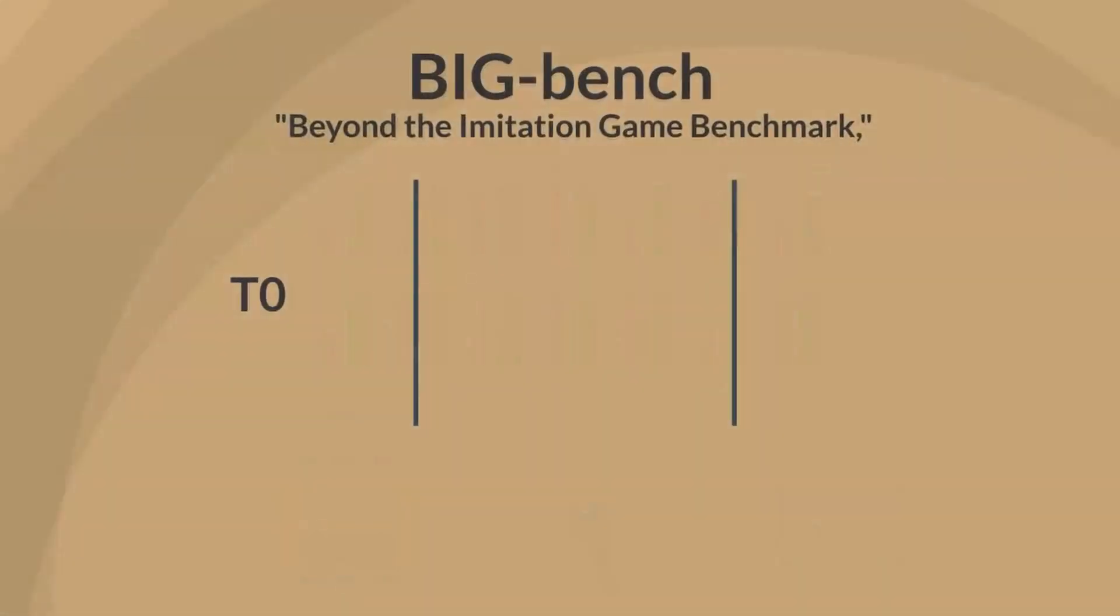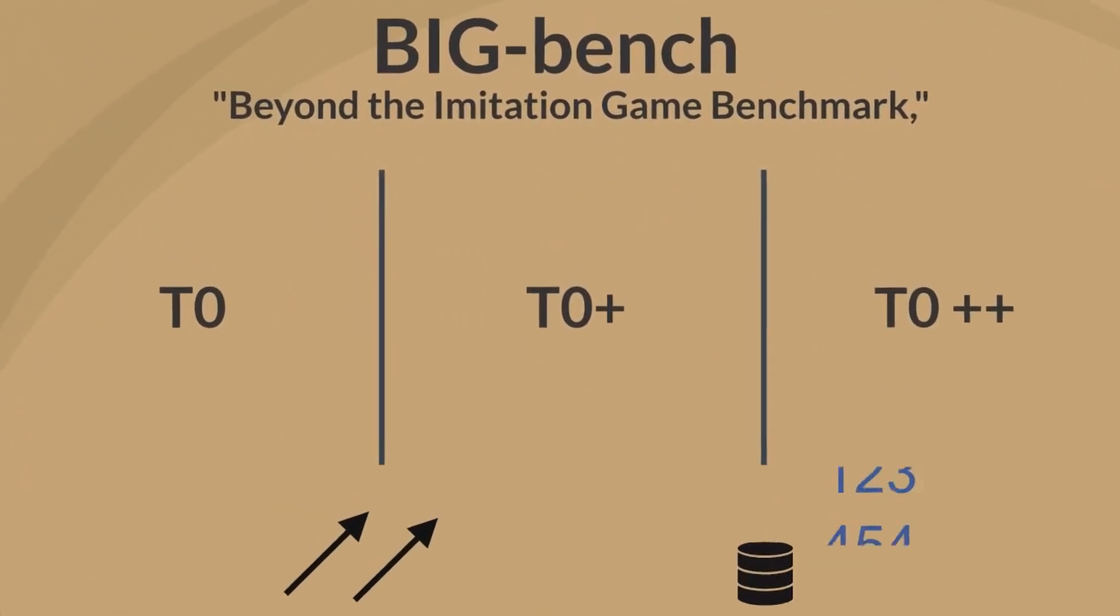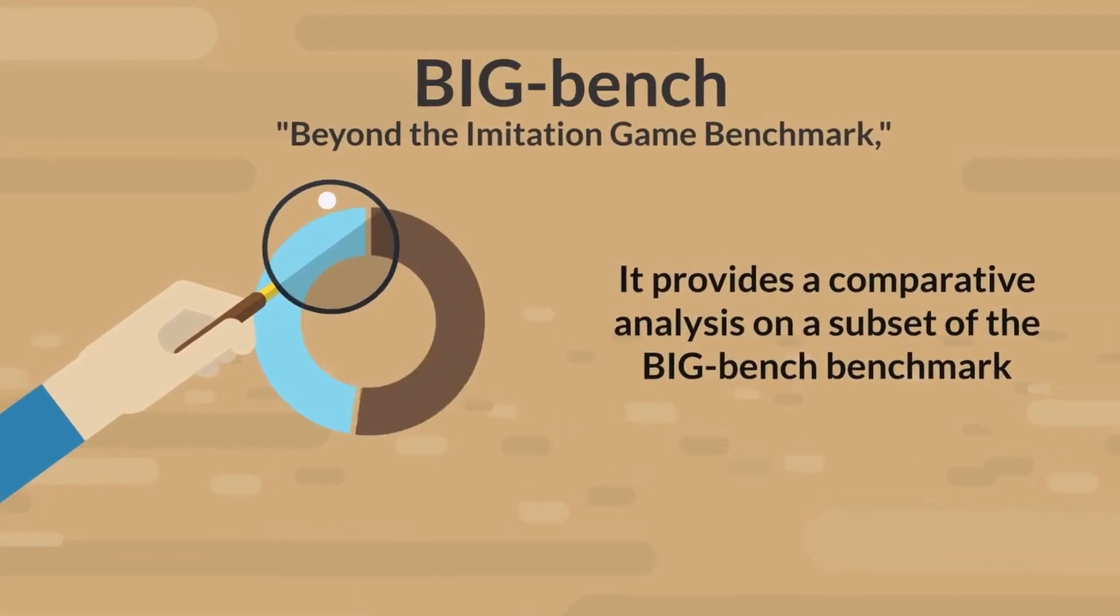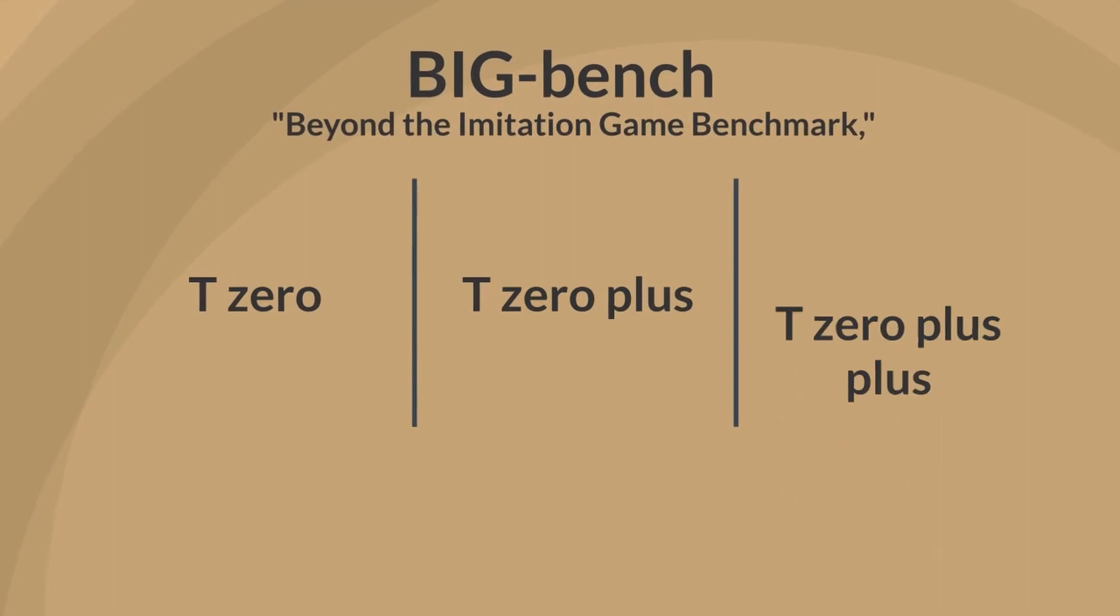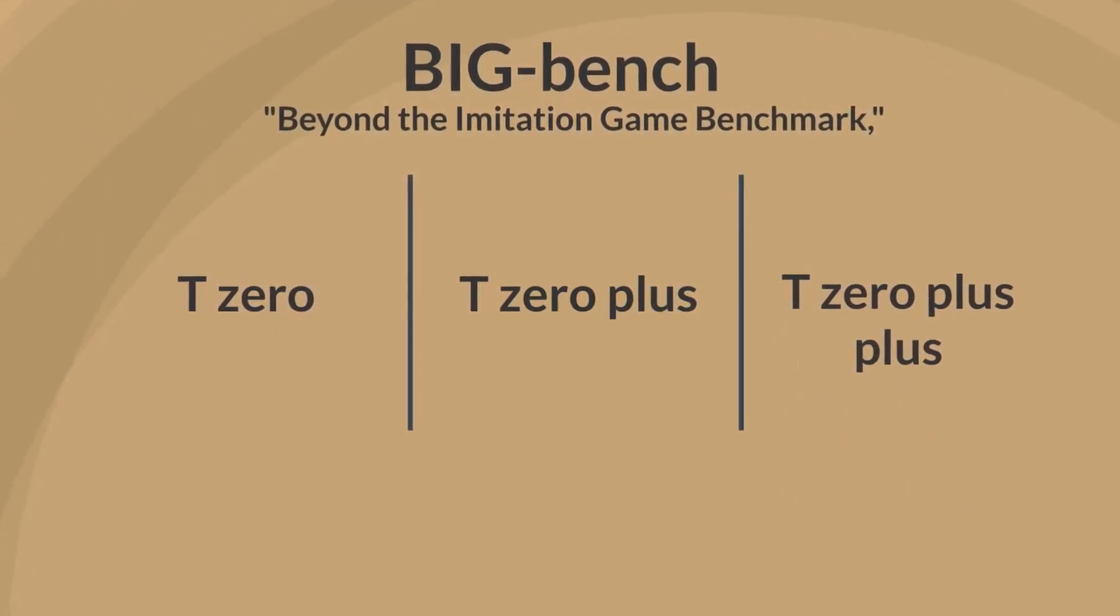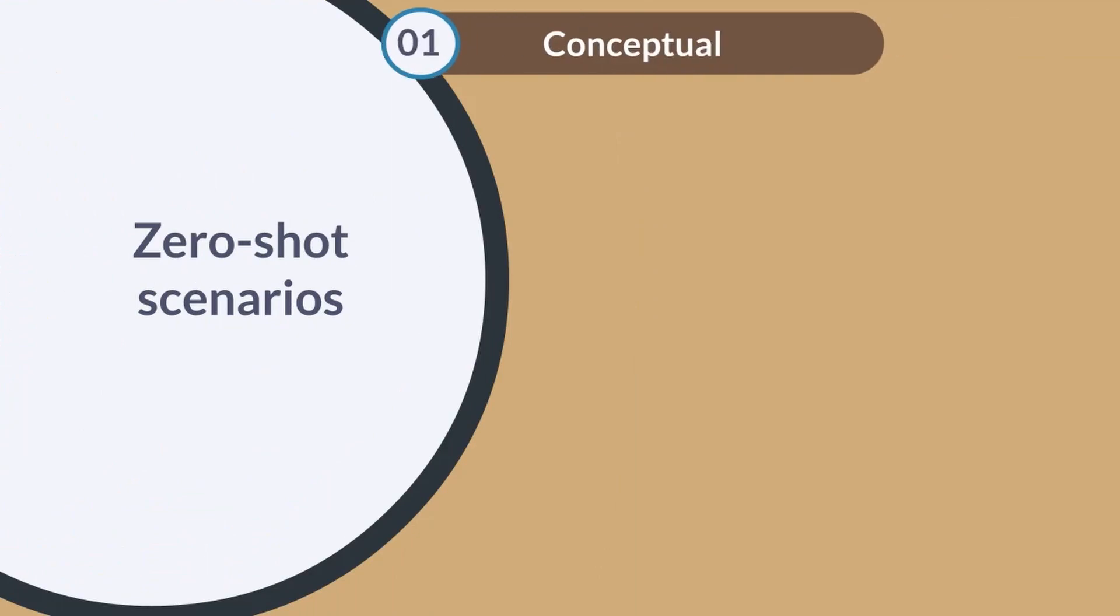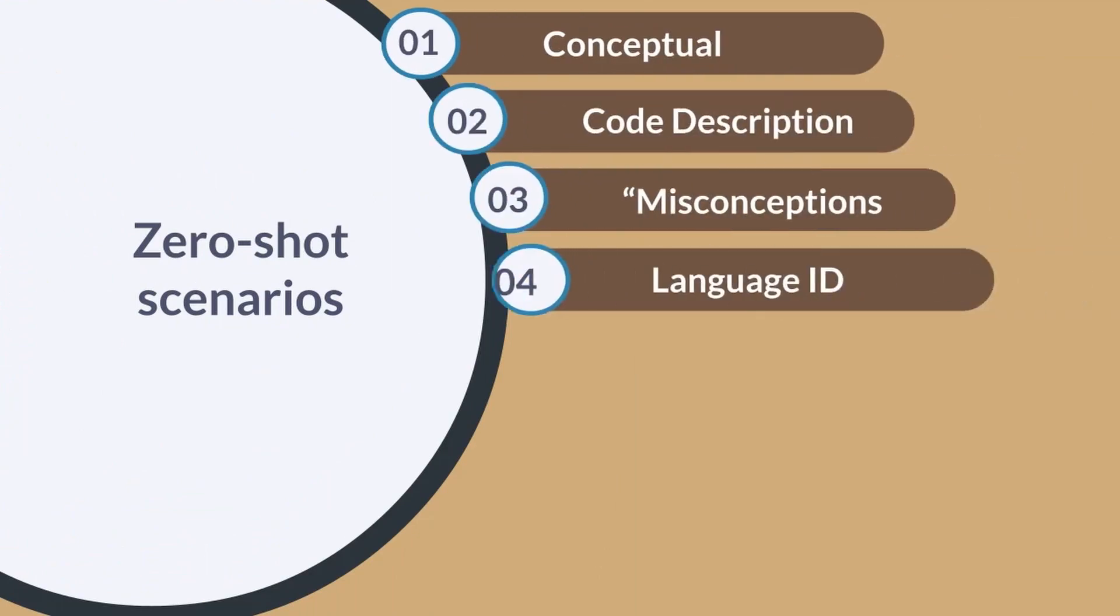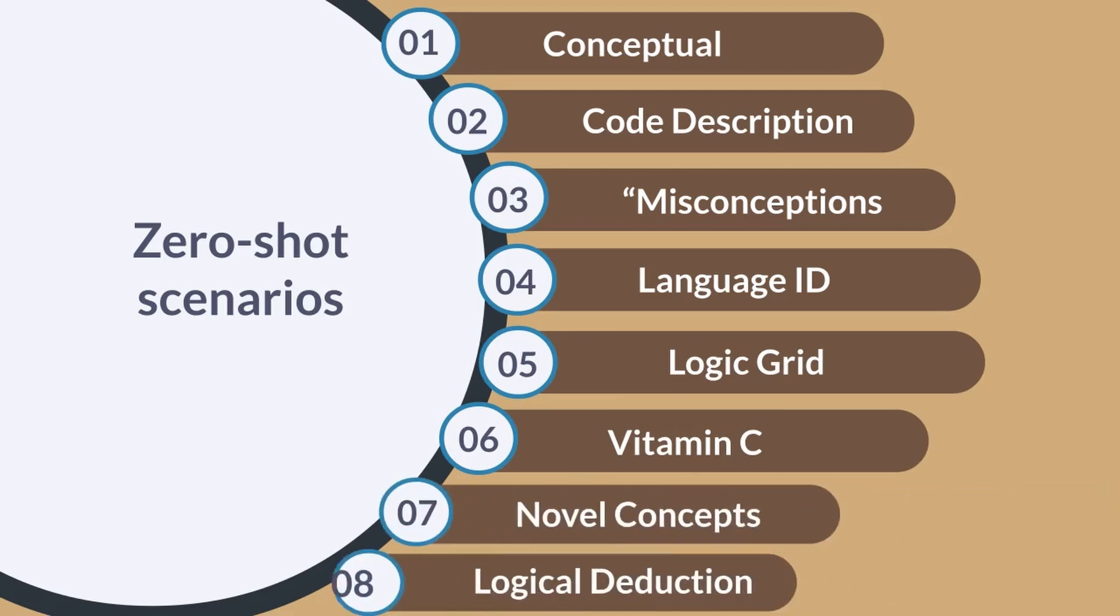The baseline models are transformer-based language models provided by BigBench maintainers, who also provide one prompt per dataset. We can see that T0, T0+, and T0++ are identical, except for increasing number of training datasets. It provides a comparative analysis on a subset of the BigBench benchmark, with T0 and its iterations, T0+ and T0++, outperforming the baseline models in zero-shot scenarios across diverse tasks like conceptual, code description, misconceptions, language ID, logic grid, vitamin C, novel concepts, and logical deduction, indicating the effectiveness of training on a wider range of datasets.